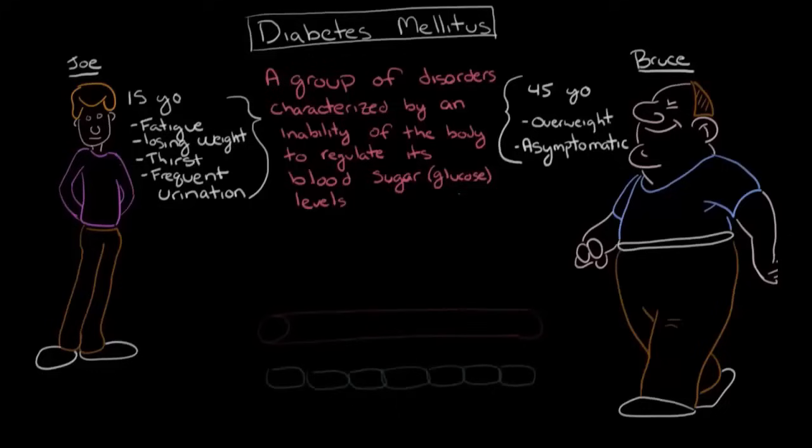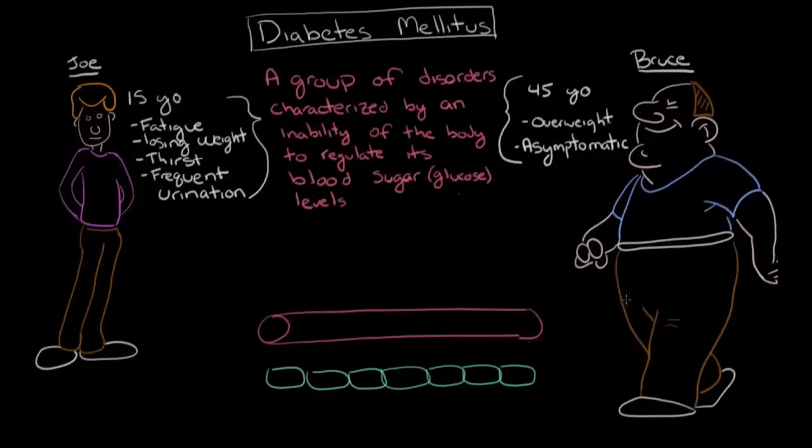To get a better idea of this, let me bring in a simple diagram here. This right here in pink, imagine this is a blood vessel, and in this blood vessel there is blood going through, and that blood has glucose. Glucose is a sugar, and it's the body's preferred source of energy.